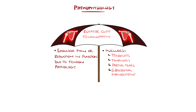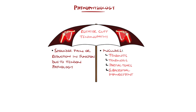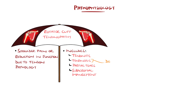Some sources also include full thickness tears here, but they are generally excluded. Pathology develops through a spectrum of processes. There can be degenerative changes, termed tendinosis.